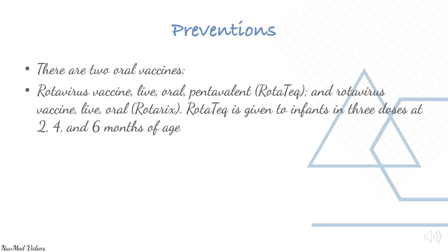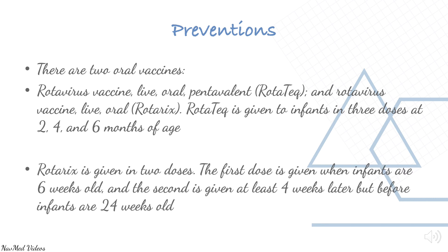The two oral rotavirus vaccines are: Rotavirus Vaccine Live Oral Pentavalent and Rotarix. Rotarix is given in two doses — the first dose when infants are six weeks old, and the second dose at least four weeks later, but before infants are 24 weeks old.